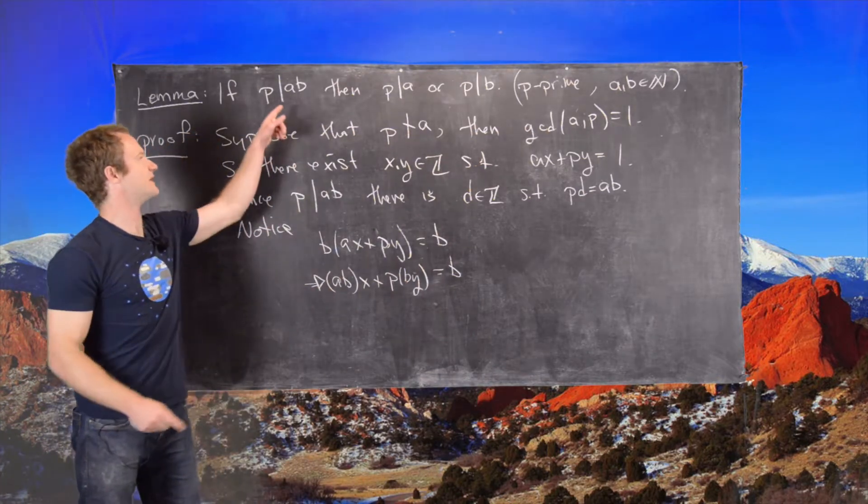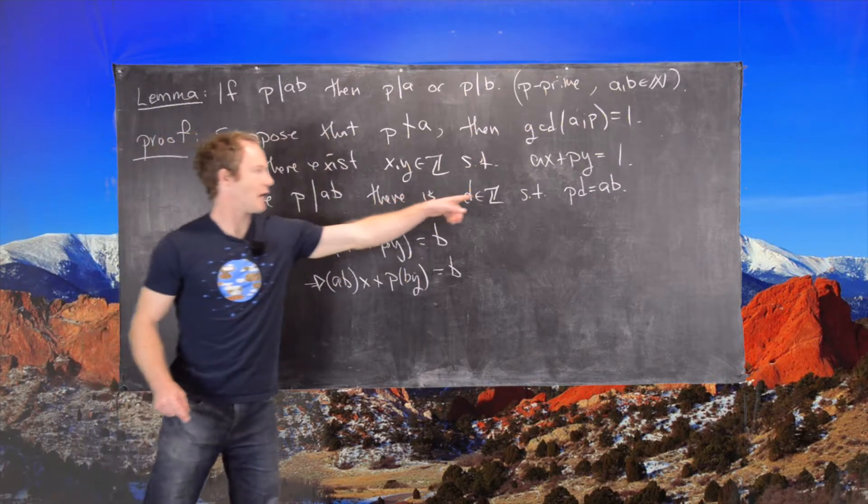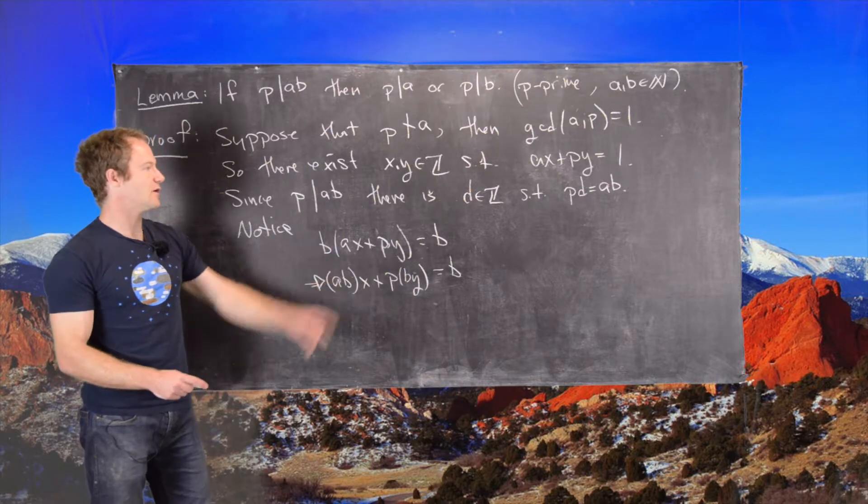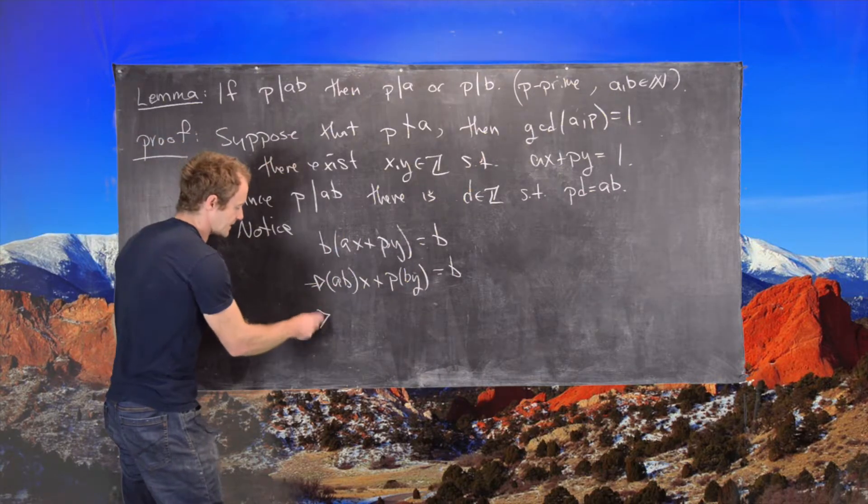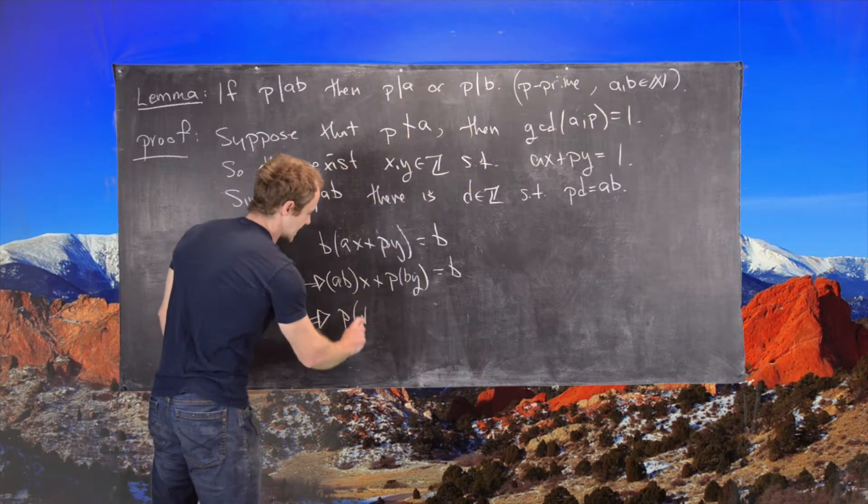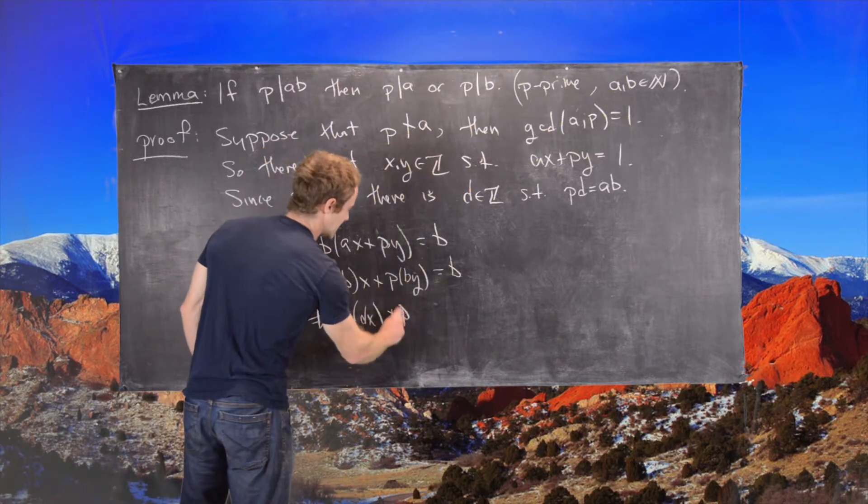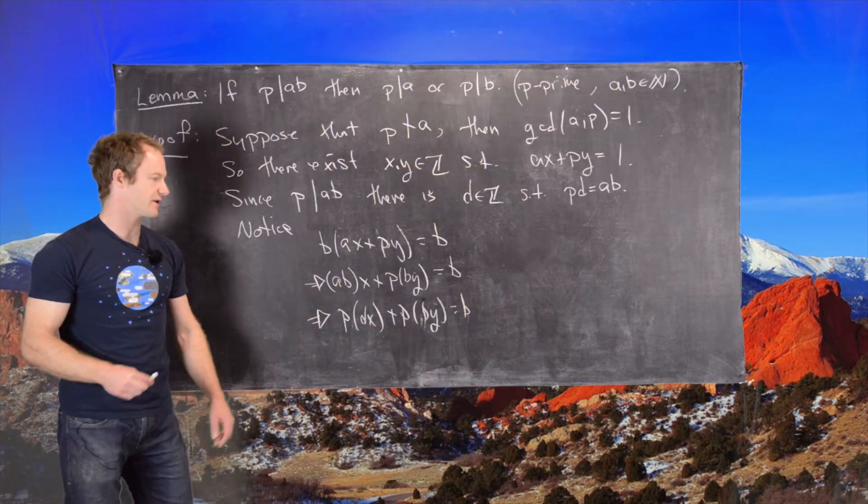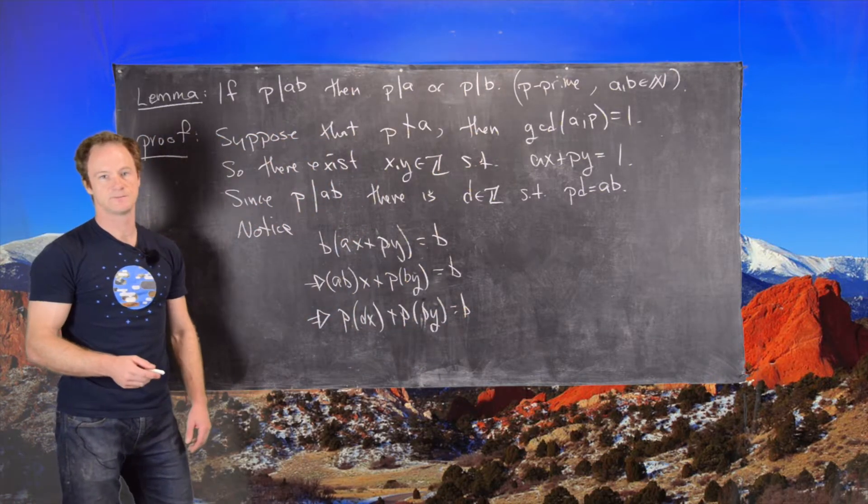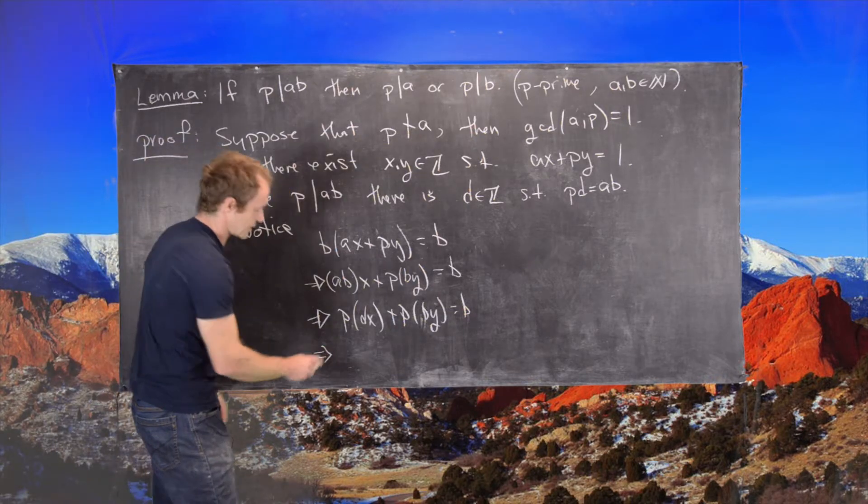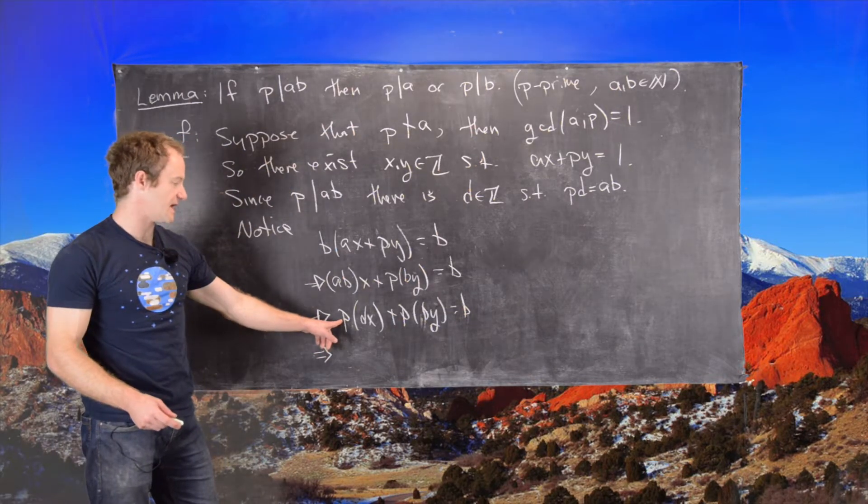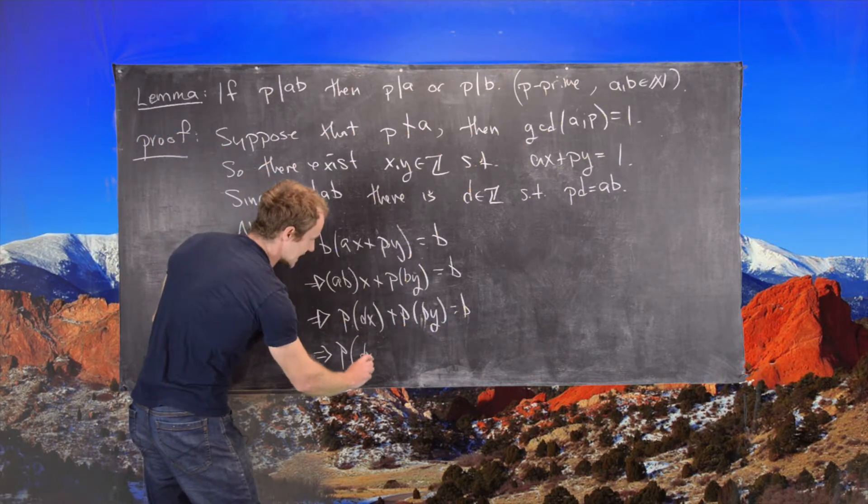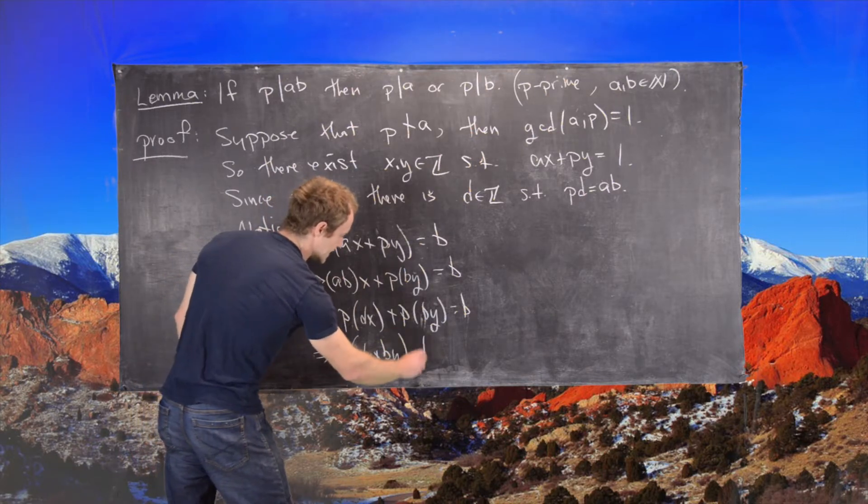By our assumption that P divides AB, we can replace AB with P times D. So, P times DX plus P times BY equals B. Notice I'm freely reassociating as needed. We can factor a P out of the left-hand side, so we can write P times DX plus BY equals B.